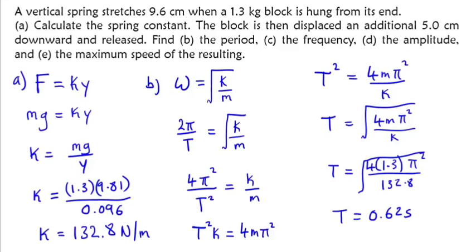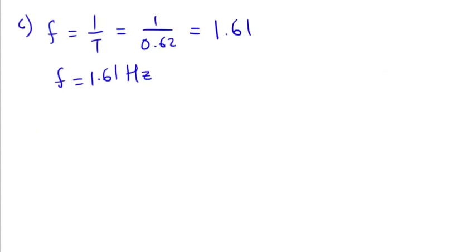Part D asks for the amplitude. The amplitude has already been given to us in the question. The block is then displaced an additional five centimeters. This additional five centimeters is the maximum displacement. Since it's the maximum displacement, that is automatically our amplitude. Amplitude equals 5 cm or 0.05 meters.